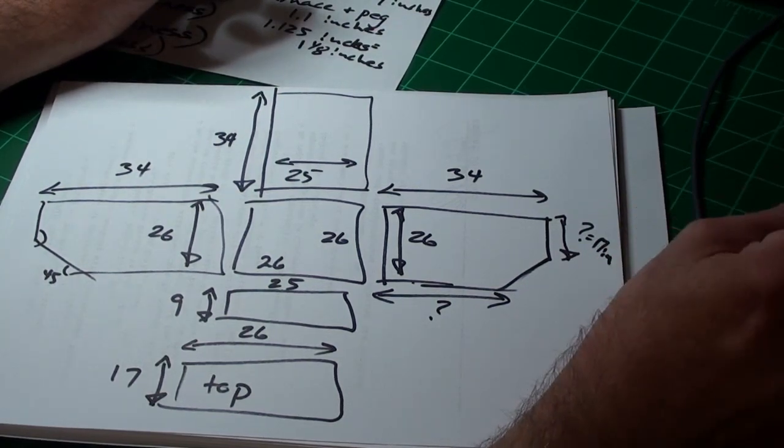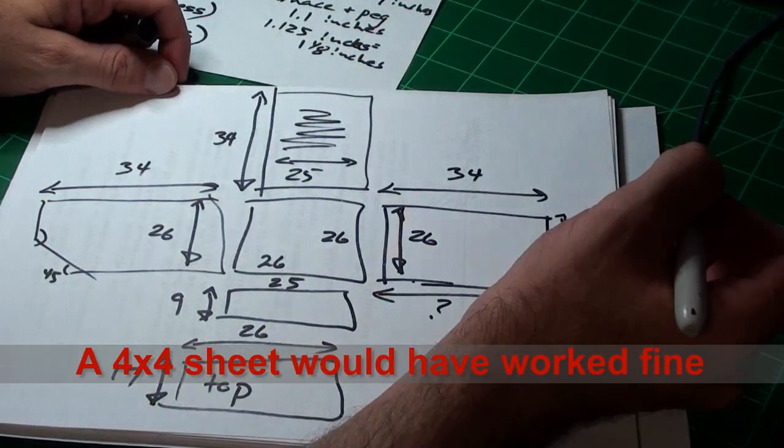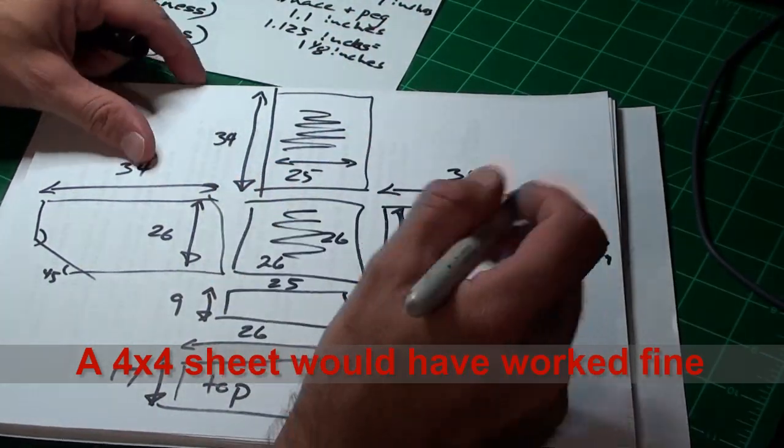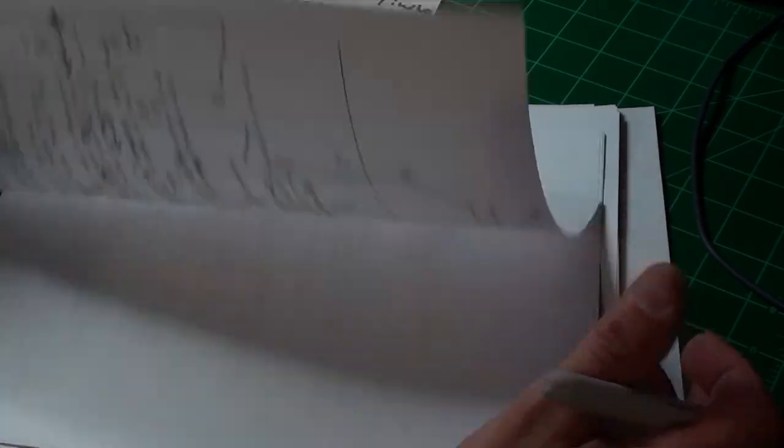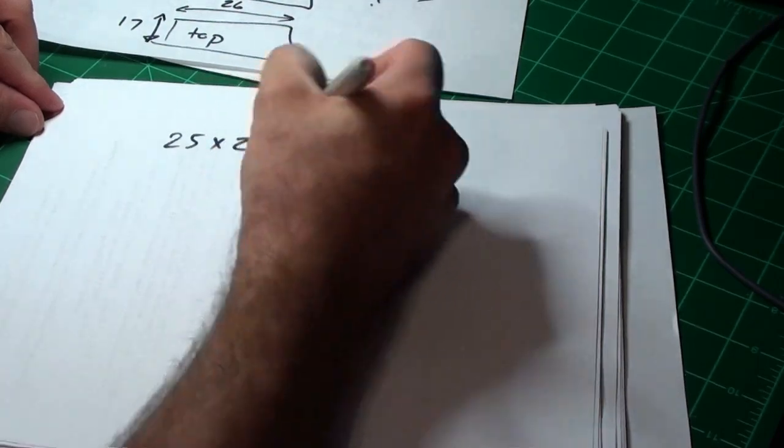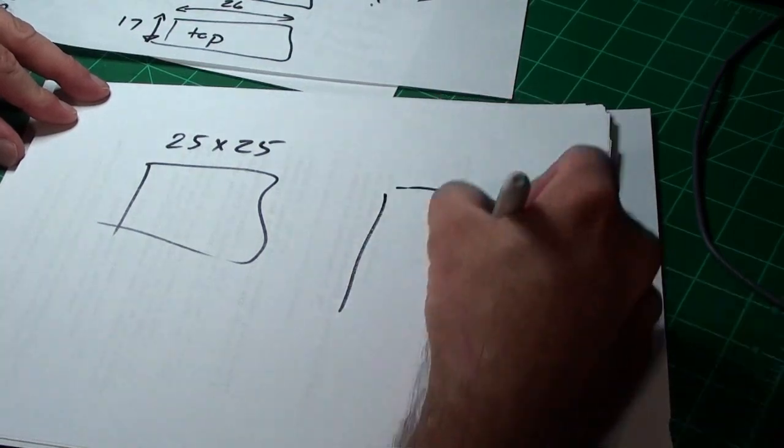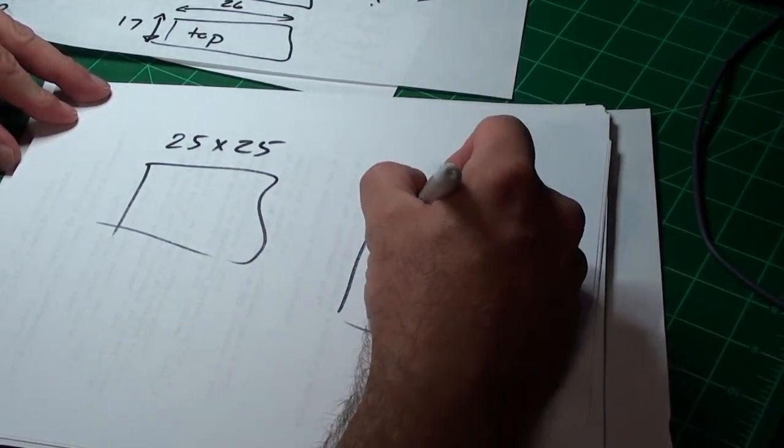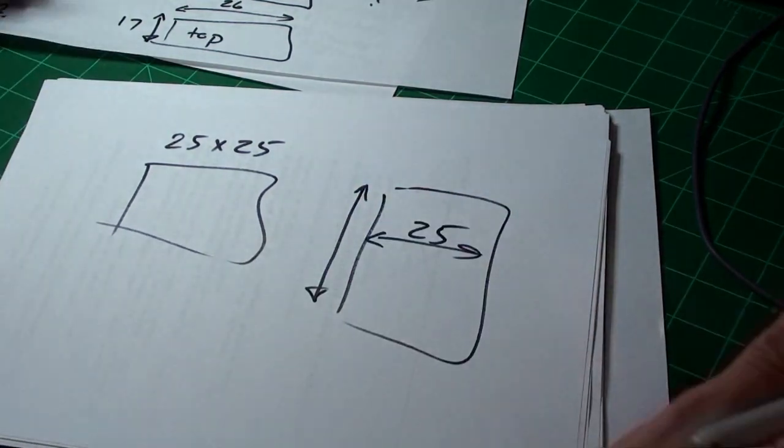I also bought a four by eight sheet of pegboard. I'm putting the pegboard along this back wall and across the bottom here. The pegboard is going to be 25 by 25 for the bottom. On the back wall, the width is 25.